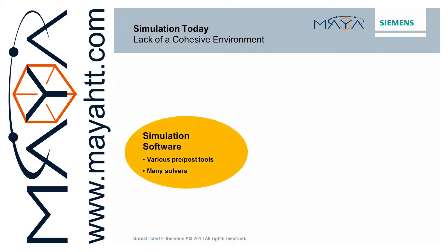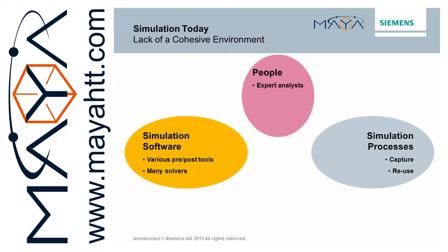Traditional simulation tools lack a cohesive environment. Instead, they are a conglomeration of many different disconnected tools. In addition, these tools are only geared toward expert analysts, of which there is a very limited supply. This alone causes a bottleneck and limits the amount of simulation that can be performed. Further hampering simulation are the simulation processes themselves. It may be possible to automate some of the tasks, but the level of automation greatly relies upon the automation capabilities available within each of the specific tools. Capturing and automating more complicated multi-physics processes is virtually impossible due to the complexity of managing the data flow and automation of each tool.